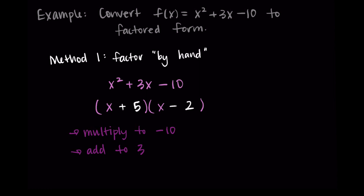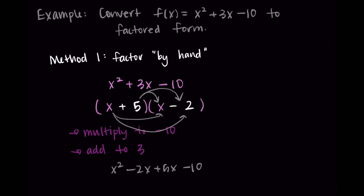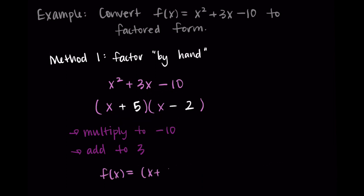Remember, when you're factoring you can always double check by going backward — distribute everything out and make sure you get what you started with. So x times x is x squared, minus two x plus five x minus 10. Then negative two x and positive five x simplify to three x, giving back x squared plus three x minus 10. So this is a correct factoring. The solution in factored form is f of x equals x plus five times x minus two.